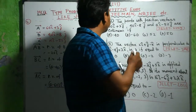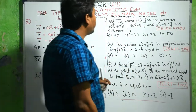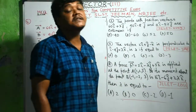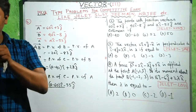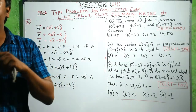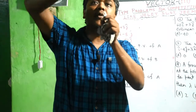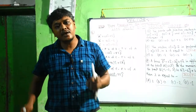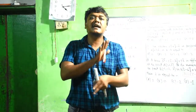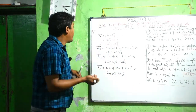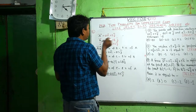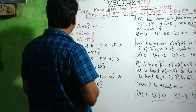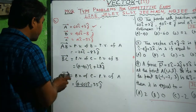Problem 2: The points with position vectors 60i plus 3j, 40i minus 8j cap, and ai minus 52j cap are collinear. What is the meaning of collinear? Three points are given; collinear means they lie on the same line. The condition is that vectors AB and BC either coincide or are parallel to each other. Position vector of A equals 60i plus 3j, B is 40i minus 8j, and C equals ai minus 52j.